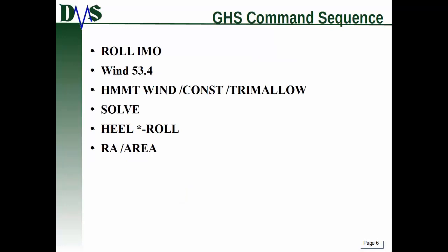Now let's go over the command sequence for the IMO roll criteria. Use this exact sequence — don't modify it. You start by typing 'roll IMO' to define your roll angle. Then define a wind of 53.4 knots. Then apply the healing moment from that wind using 'wind constant trim allow,' and you can include a band in a combined command as well. Then solve for the vessel — that takes the healing moment and lets the vessel heel to find the initial equilibrium angle. Then override that with 'heel of star minus roll,' using the roll angle calculated earlier.